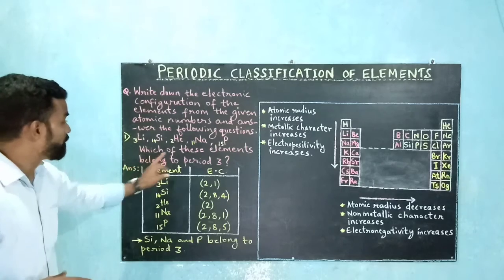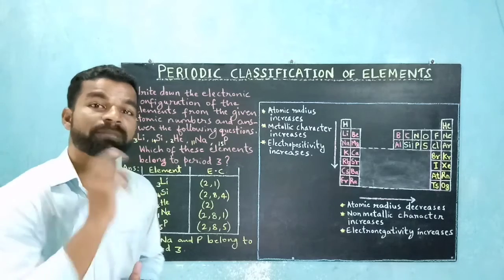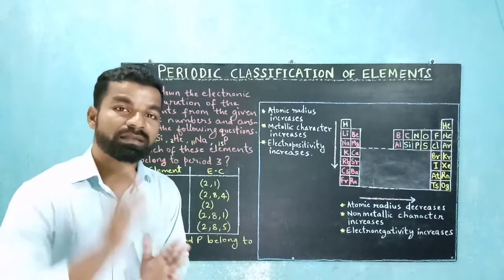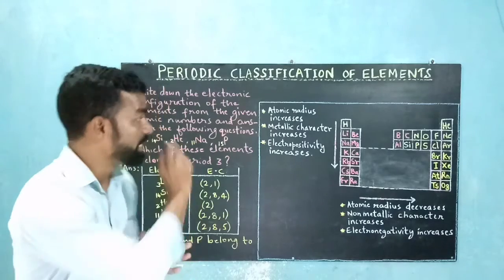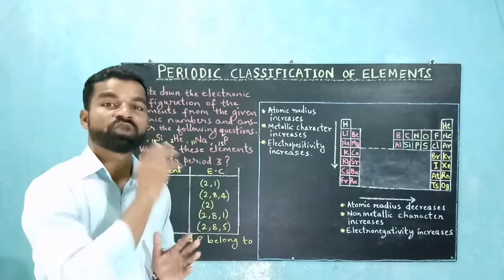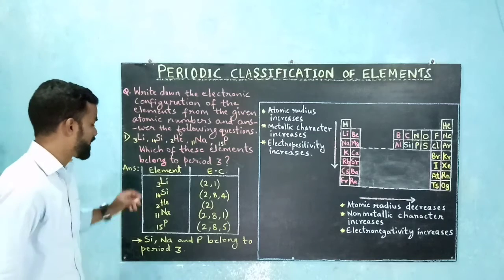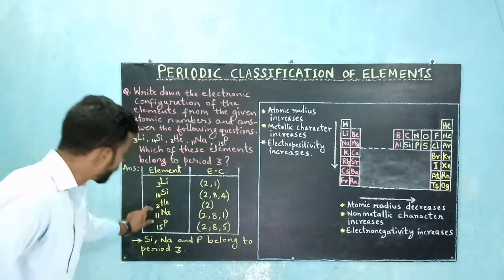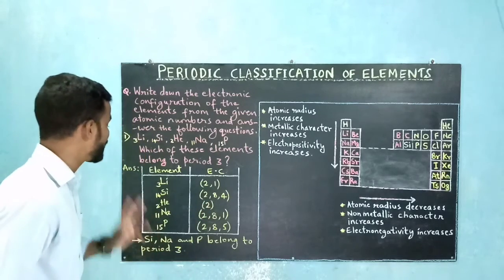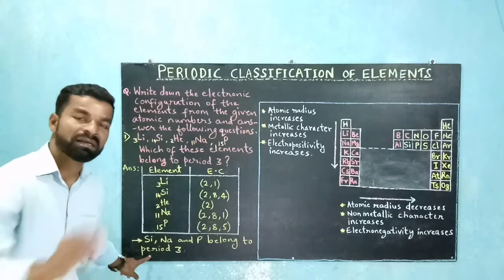Which of these elements belong to period 3? The electrons of elements in period 1 are placed in 1 electronic shell, period 2 in 2 shells, and period 3 in 3 shells. Silicon, sodium, and phosphorus each have three electronic shells, so silicon, sodium, and phosphorus belong to period 3.